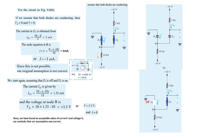So D1 is reverse biased as assumed, and the final values are I = 0 and V = 3.3V. I hope this gives you an idea of how we can proceed step by step with assumption. Thank you very much.